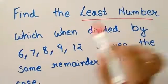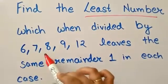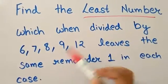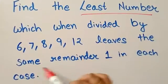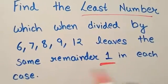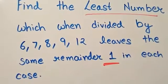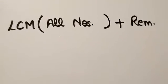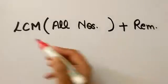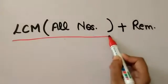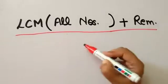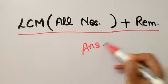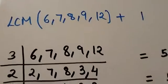Find the least number which when divided by 6, 7, 8, 9, or 12 leaves the same remainder as 1 in each case. To solve such questions, the trick is to take the LCM of all the numbers which are given plus the remainder, and this will be your answer.